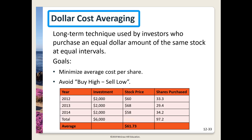Dollar cost averaging is a long-term technique used to invest in the same stock over a number of years. For example, the investor makes a $2,000 investment each year at whatever the market price is. Over time, normal market moves minimize your average cost per share.